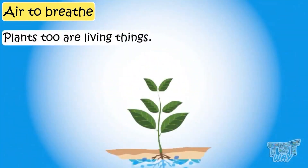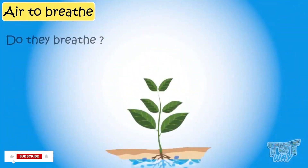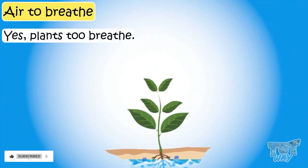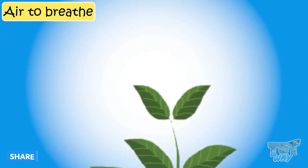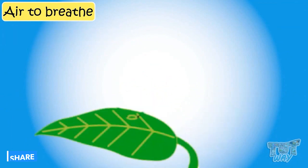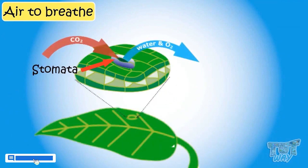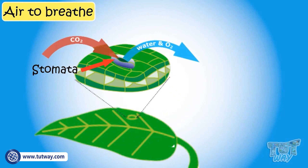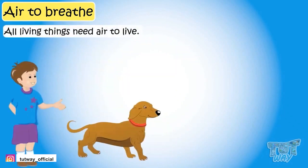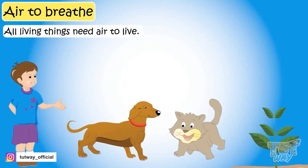Plants too are living things. Do they breathe? Yes, plants too breathe. They breathe through tiny pores on leaves called stomata. We will learn more about it in higher grades. So, kids, we learned that all living things need air to live. Living things cannot live without air, which is necessary for breathing.